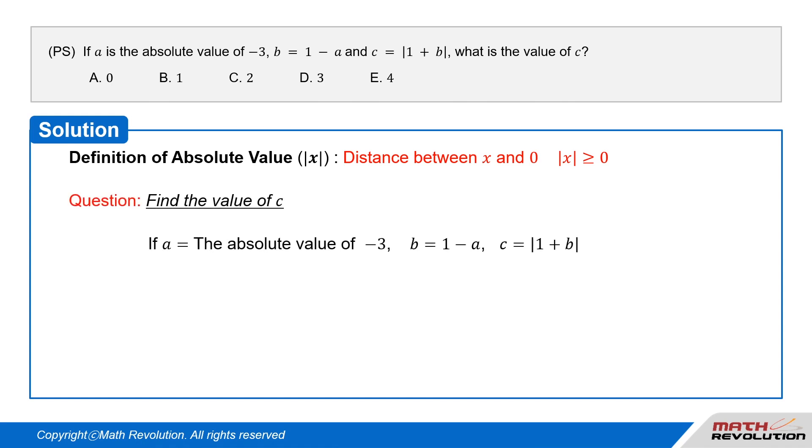We have to find the value of C. If A is the absolute value of -3, B equals 1 minus A, and C equals the absolute value of 1 plus B.